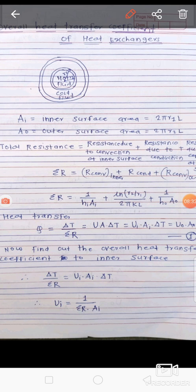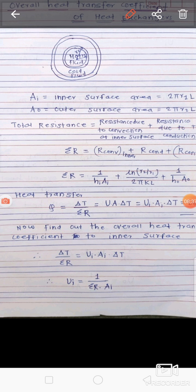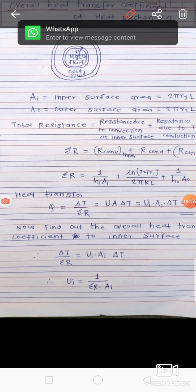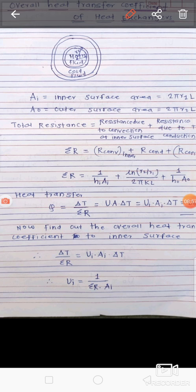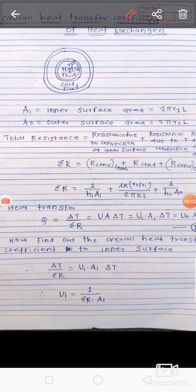Now we find the heat transfer. The general equation is Q = ΔT / ΣR. We also define U as the overall heat transfer coefficient, so Q = U·A·ΔT. For the inner surface, Q = Ui·Ai·ΔT, and for the outer surface, Q = Uo·Ao·ΔT. All these expressions give the same heat transfer rate.